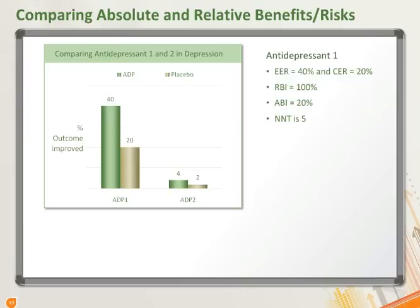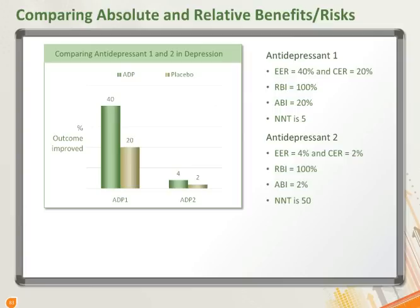Thus, 5 people need to be treated with antidepressant 1 to get one additional person better. Comparing this to antidepressant 2: for the study with ADP2, the EER is 4% and the CER is 2%. The relative benefit increase is 100%, which is exactly the same as ADP1.